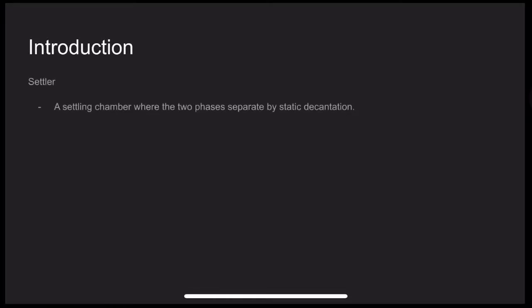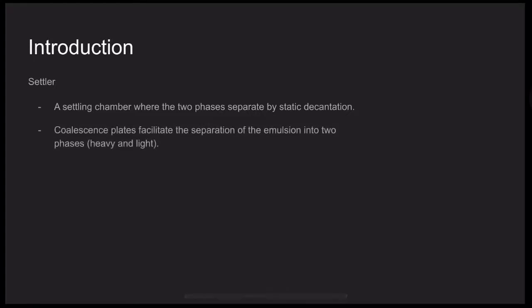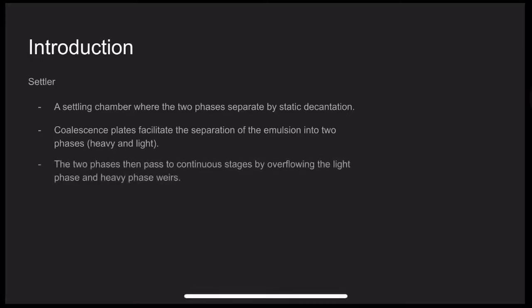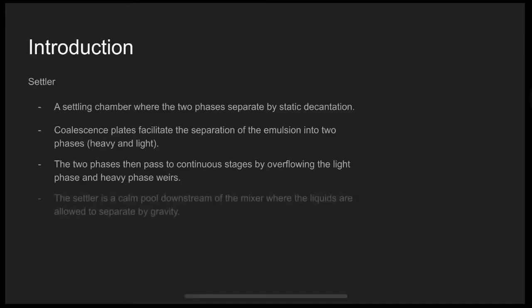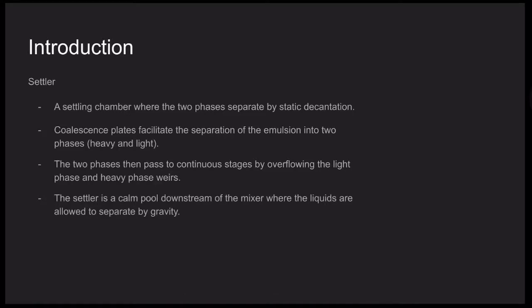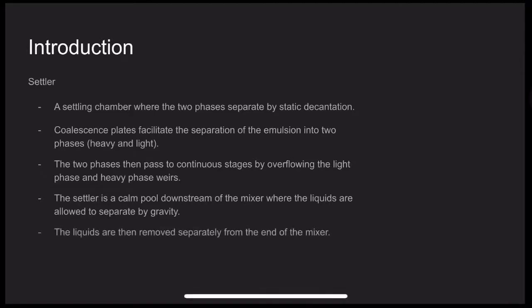Now let's proceed with the settler. It is a settling chamber where the two phases separate by static decantation. Coalescers facilitate the separation of the emulsion into two phases which are heavy and light. The two phases then pass to continuous stages by overflowing the light phase and the heavy phase weirs. The settler is coupled downstream of the mixer where the liquids are allowed to separate by gravity.